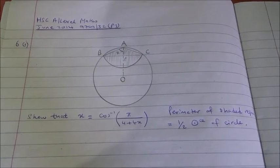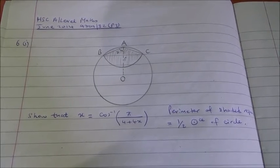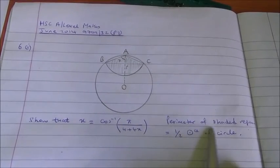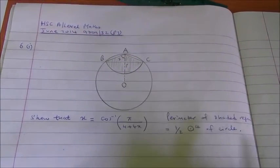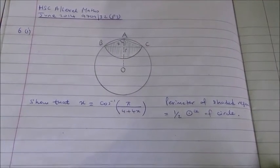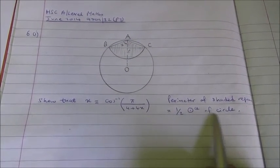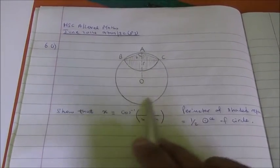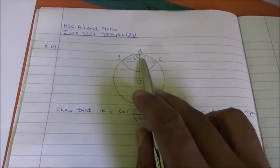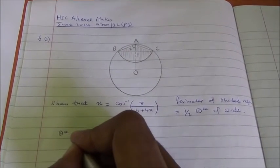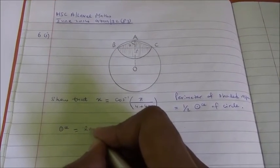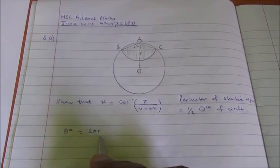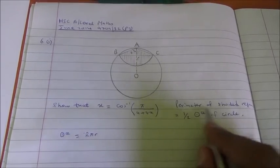For the first part, we need to show that X equals the inverse cosine of pi upon 4 plus 4X, given that the perimeter of the shaded region equals half the circumference of the circle. For a question like this, I would advise you to find the circumference of the circle and then divide it by 2. The radius is R, so the circumference of the circle is 2πR. Half of this gives us the perimeter of the shaded region.